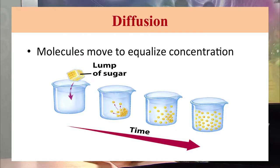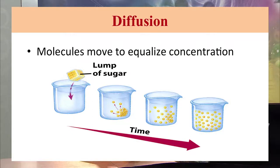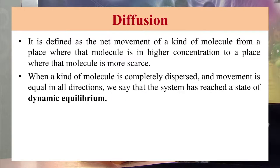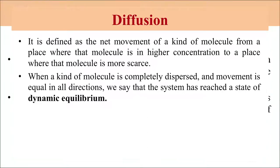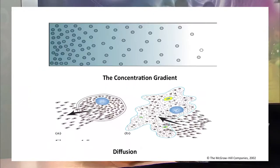The first type is diffusion. Each molecule has its own kinetic energy, due to which it moves from higher concentration to lower concentration. For example, if we place a sugar cube into a glass of water, after some time the sugar molecules start moving from the higher concentration to the lower concentration. After some time, all the sugar molecules mix into the water until equilibrium is obtained. When a kind of molecule is completely dispersed and movement is equal in all directions, this state is called dynamic equilibrium.